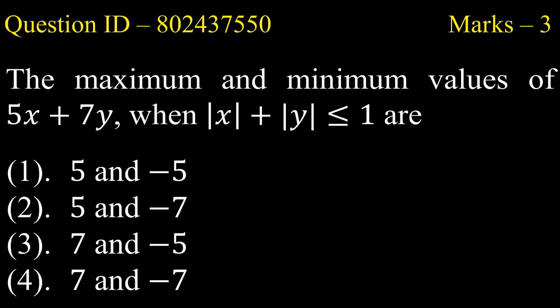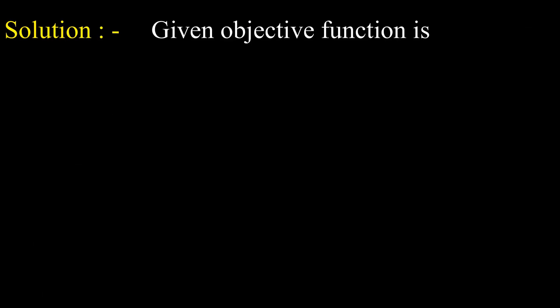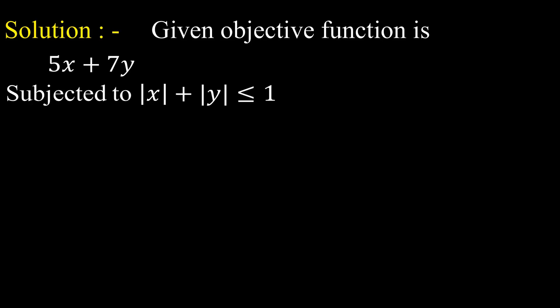The question is: find the maximum and minimum value of 5x plus 7y when |x| + |y| ≤ 1. The options are: option 1: 5 and minus 5, option 2: 5 and minus 7, option 3: 7 and minus 5, option 4: 7 and minus 7.